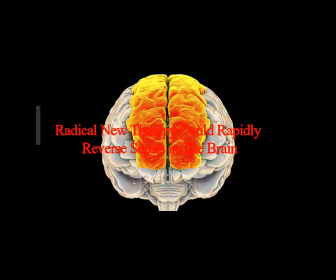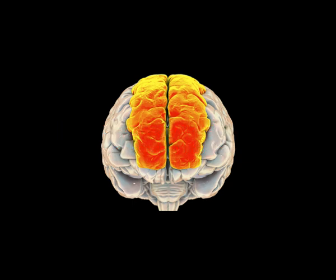Radical new therapy could rapidly reverse sepsis in the brain. A megadose of a salt made from vitamin C may reverse the extensive harm sepsis can trigger in the brain, according to a new study that examined its effects on sheep.